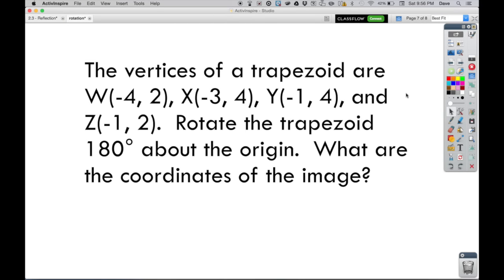All right. Here's another problem, a little bit different from that last one. The vertices of a trapezoid are W, X, Y, and Z. And once again, they've given us coordinates for each of those four points. They want us to rotate the trapezoid that those points form 180 degrees about the origin. What are the coordinates of the image?